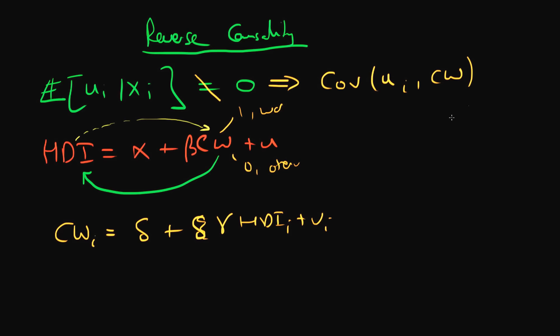If this covariance of U_i with CW does not equal zero, then that implies that this condition is no longer equal to zero and we've got the issue of endogeneity. So how do we actually prove this?